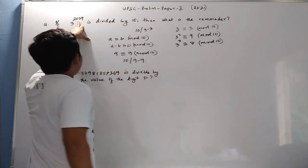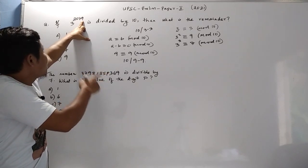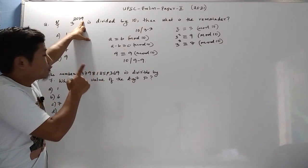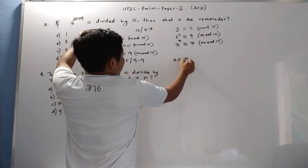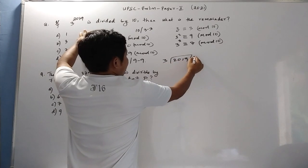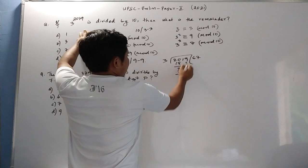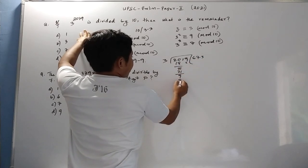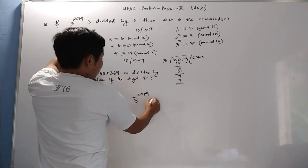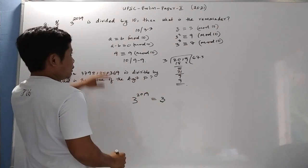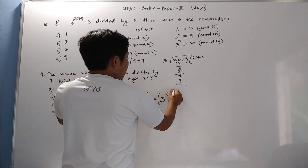So if we can write 2019 as a multiple of 3, that means 3 to the power of 2019 will be congruent to 7 mod 10. Let's see whether it is divisible by 3 or not. So 3 to the power of 2019 can be written as 3 to the power of 3 to the power of 673.